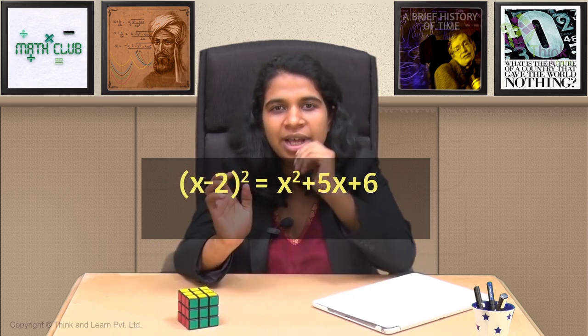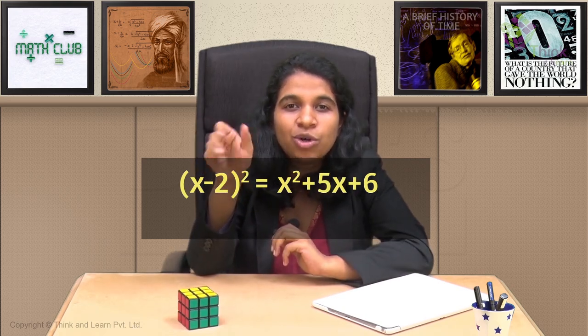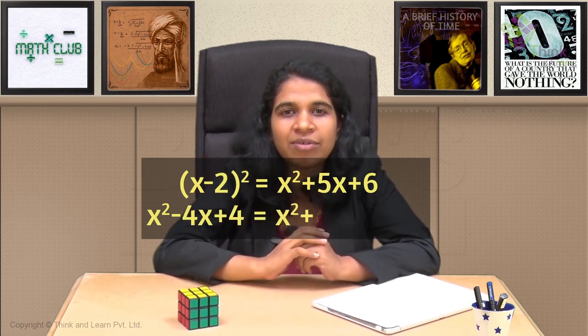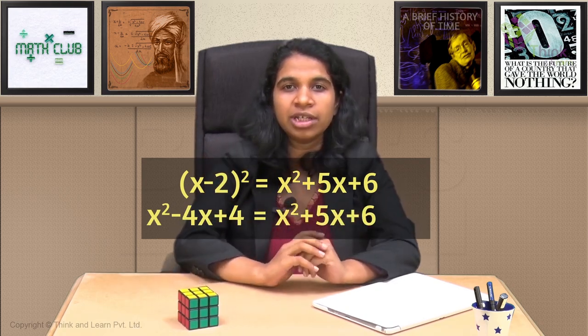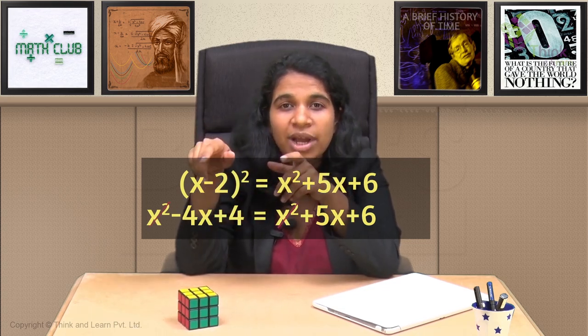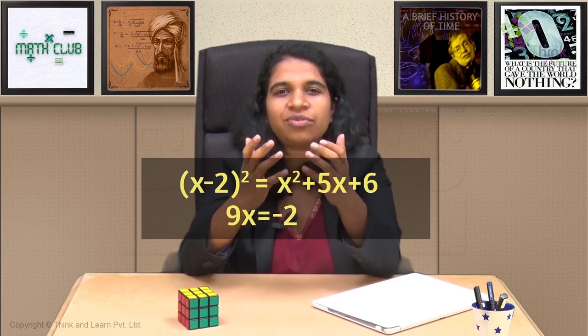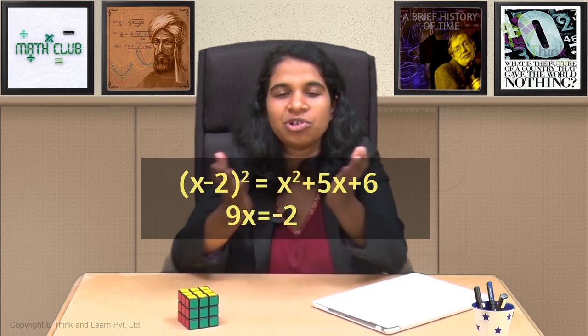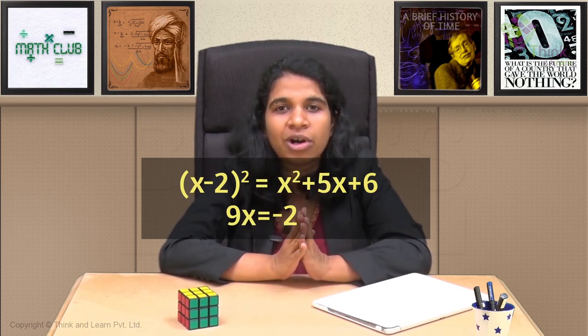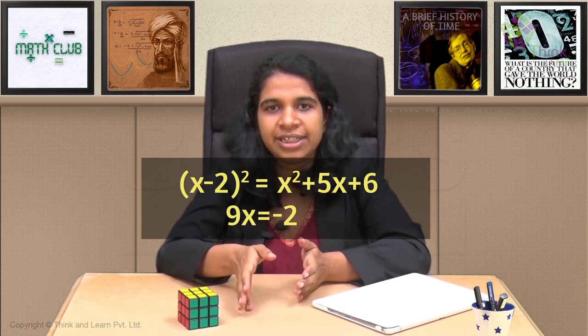So we started with x minus 2 the whole square equals x squared plus 5x plus 6. If we open out this bracket, we are going to get x squared minus 4x plus 4 equals x squared plus 5x plus 6. Now what do you see? You have an x squared on both the sides. So both of those can get cancelled. If you cancel the two x squares, you will be left with 9x equals minus 2. That's definitely not a quadratic, right? You don't see the degree of x is 2. So this equation is actually not a quadratic. The key is you need to first simplify the equation and then figure out its degree.